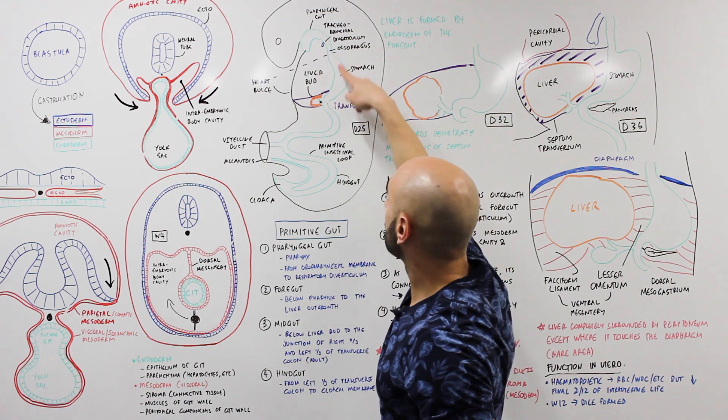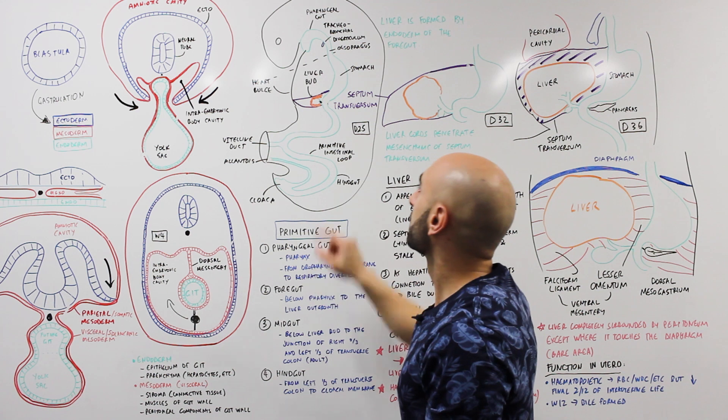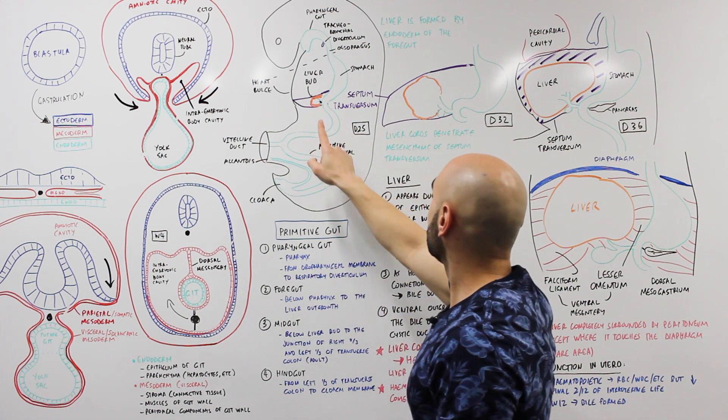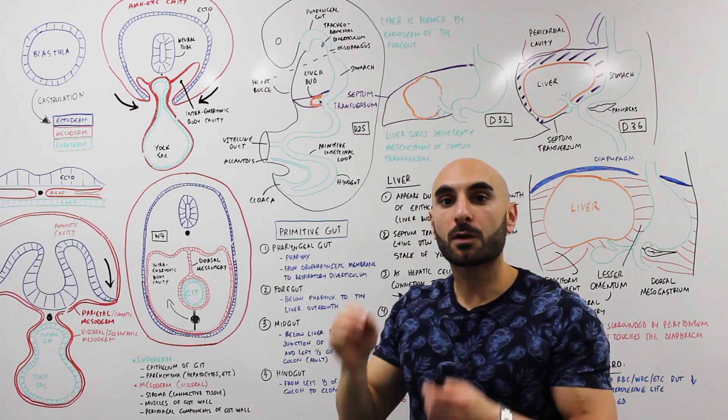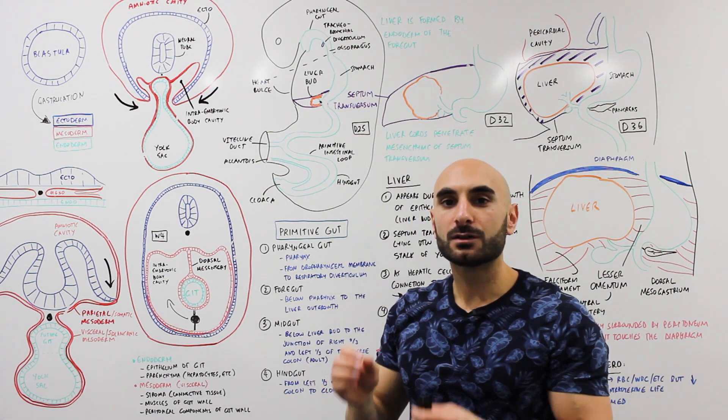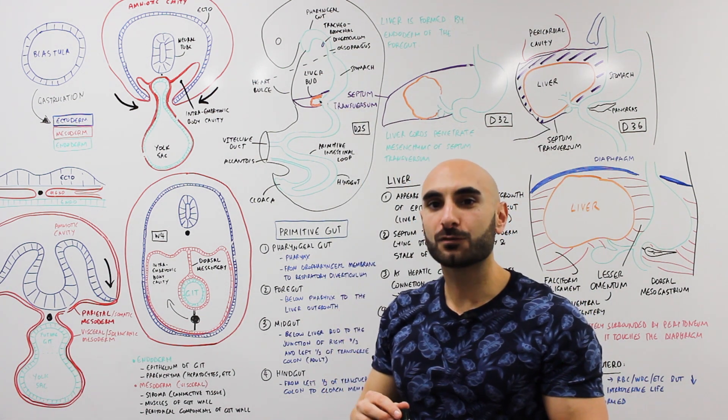Looking at it this way where we have the GIT in green here, we'll see that the liver bud appears during week 3 as an outgrowth from endoderm of the distal end of the foregut.